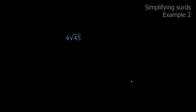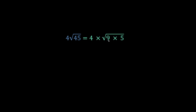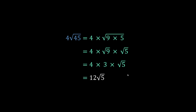Let's try another one: four root 45. I break 45 into nine times five — nine is a square number. So we have four times square root of nine times square root of five. Square root of nine is three, so now we have four times three times root five. Multiply those together: 12 root five.